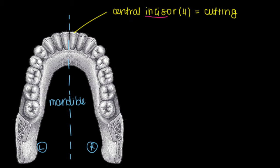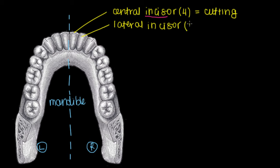The same thing is true when we talk about the lateral incisors. We've got four of them in total, just like the central incisors — there's only one on each side. And again, they're also used for cutting our food.